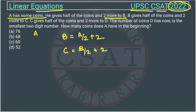C gives half of the coin and two more to D. So D will be how much? C by 2 plus 2.